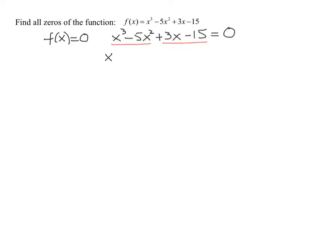Well I can pull out an x squared and what's it going to leave you with? x minus 5. You can double check: x squared times x is x cubed, x squared times minus 5 is negative 5x squared.